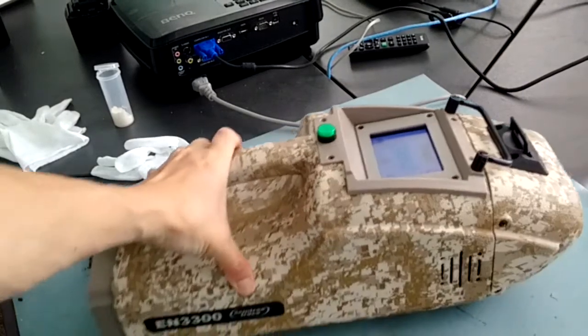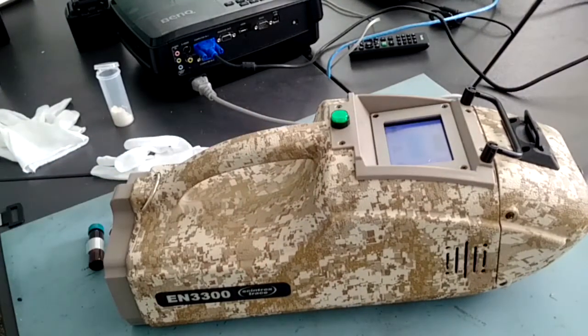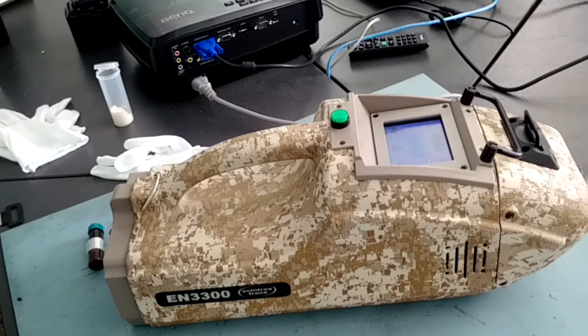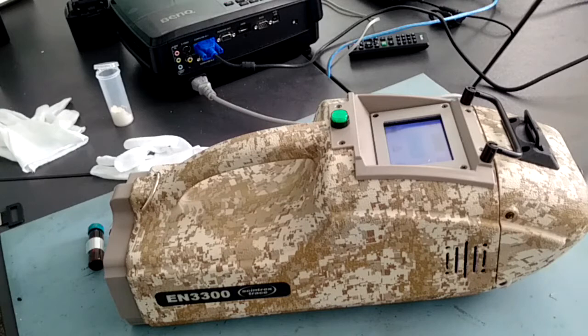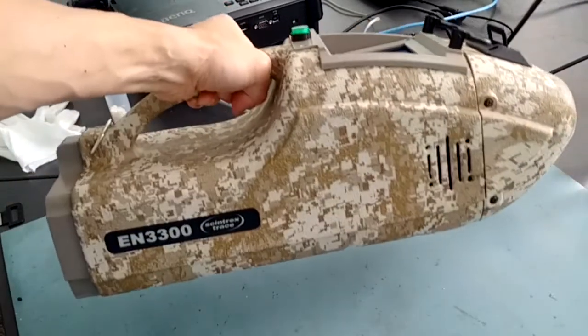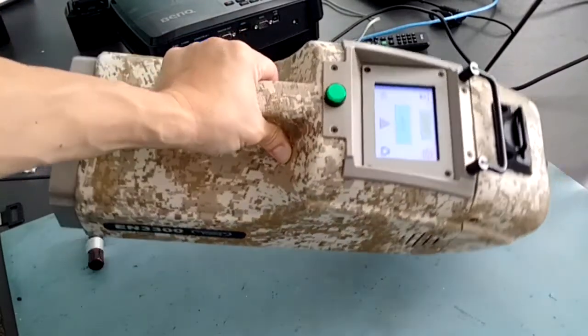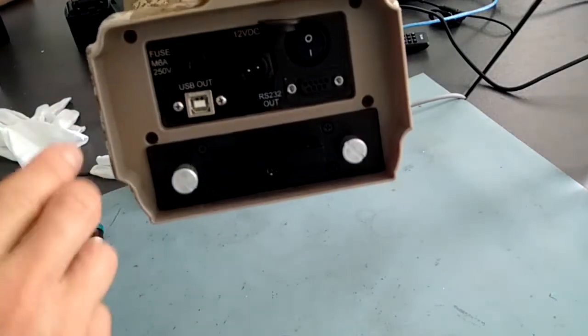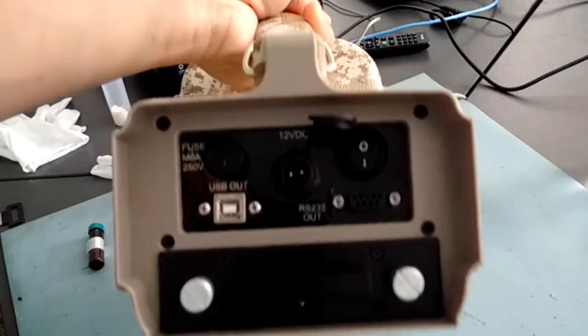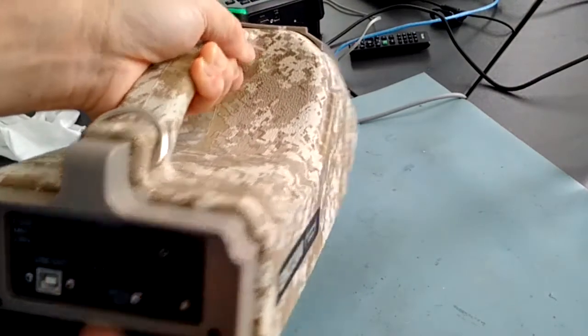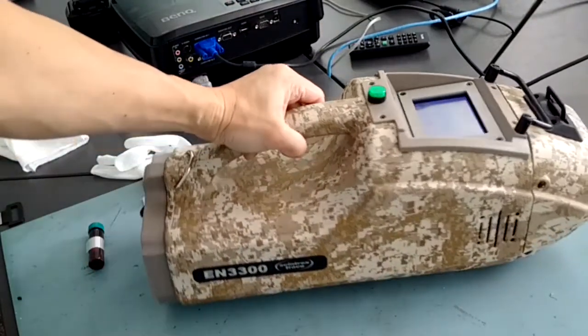So today, I'm going to briefly give you a description of the 3300. It's a portable explosive infrared detector. Basically, it weighs about three kilograms, just under three kilograms with a battery, loaded in a bag. The instrument is also provided with an external power supply so that you can leave the machine plugged into power.